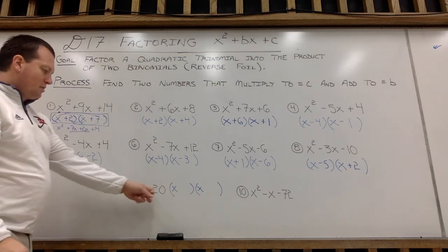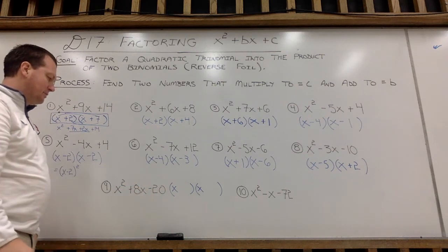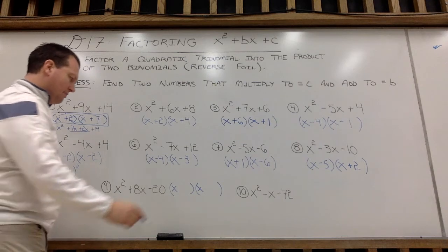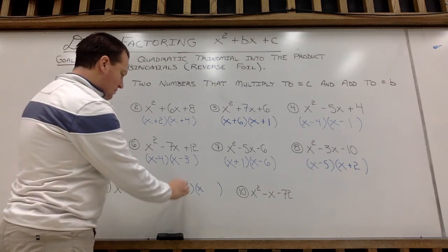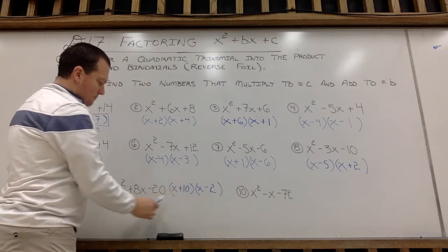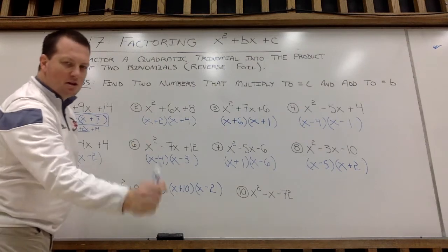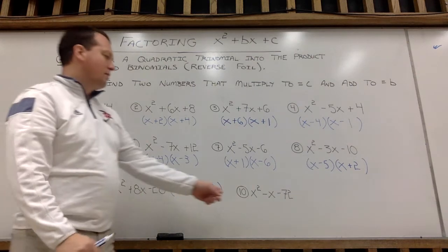Two numbers that multiply to make negative 20 and then add to make 8. Let me think. Well, if I go positive 10, negative 2. 10 times negative 2 is negative 20. And then 10 minus 2 is positive 8. Good. All right, last one.